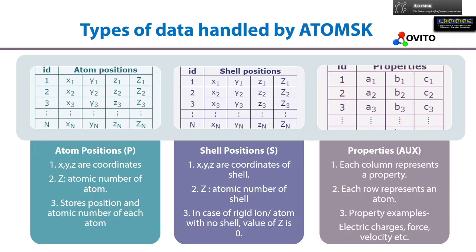Going into depth about each of these data types, firstly we find atom positions. If we look at the figure, we will see that the first row has an ID which specifies a particular type of atom. The X, Y, and Z represent the coordinates of that particular atom, while the capital Z1 represents the atomic number of that atom.